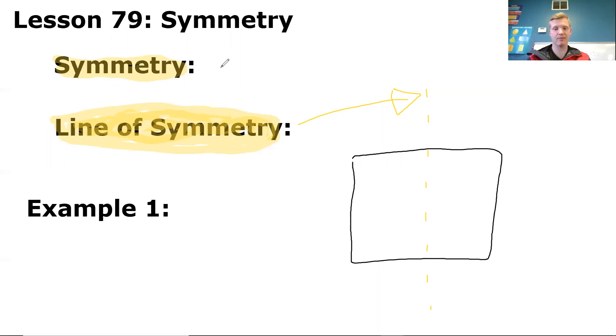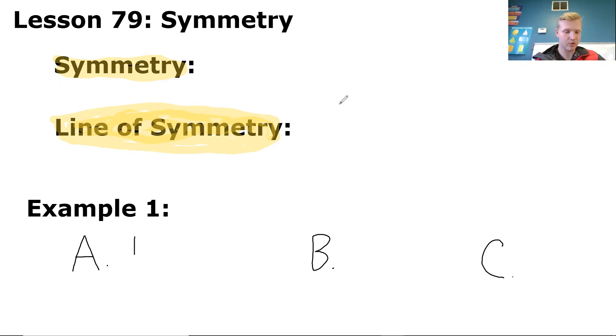So let's look at example one. If you're following along when you're in your book, we are on page 368 now. So letter A, letter B, and letter C. The question is asking which of these polygons does not have a line of symmetry.